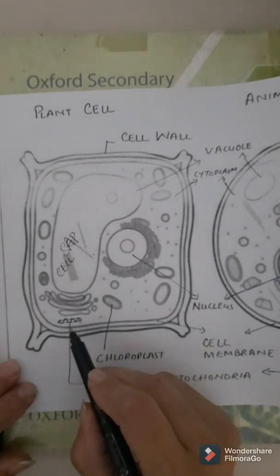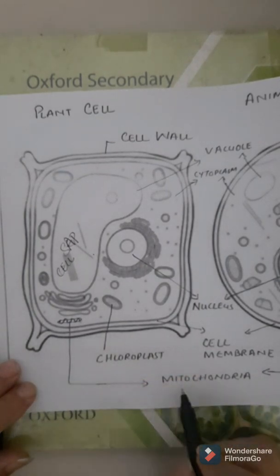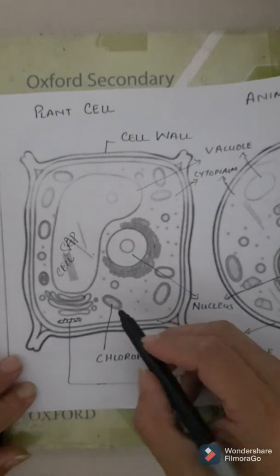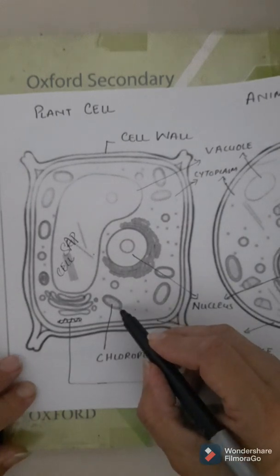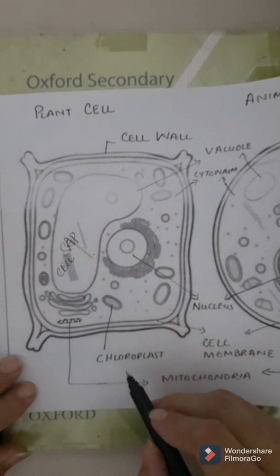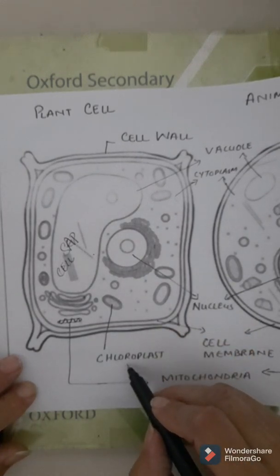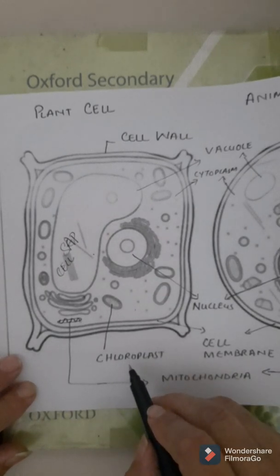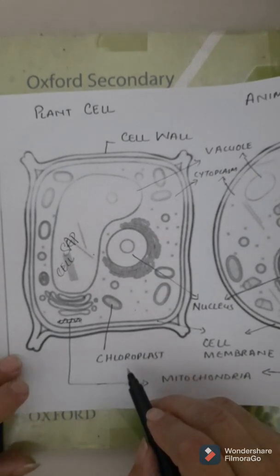Then we have the mitochondria, the powerhouse of the cell. And then we have one important organelle called the chloroplast, which contains green pigment and helps in the process of photosynthesis.